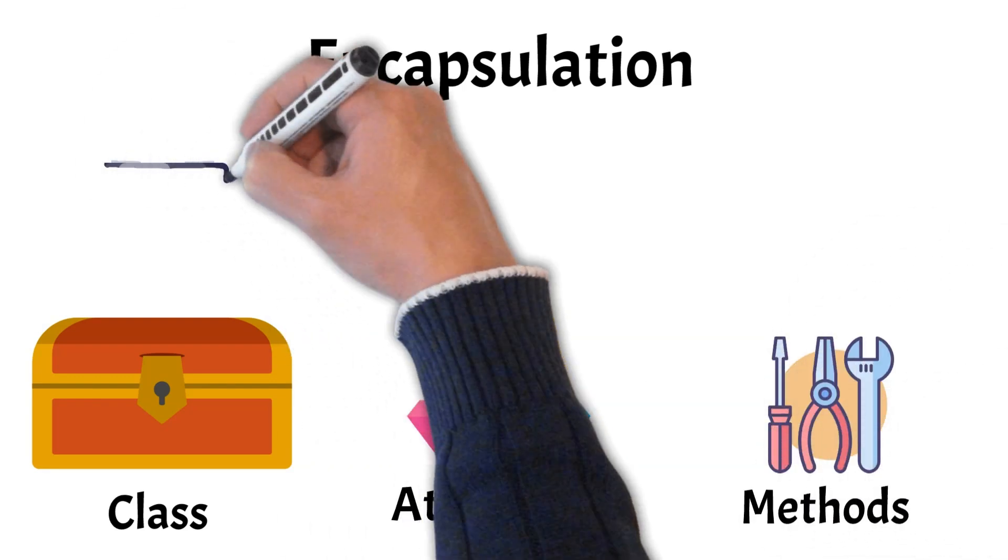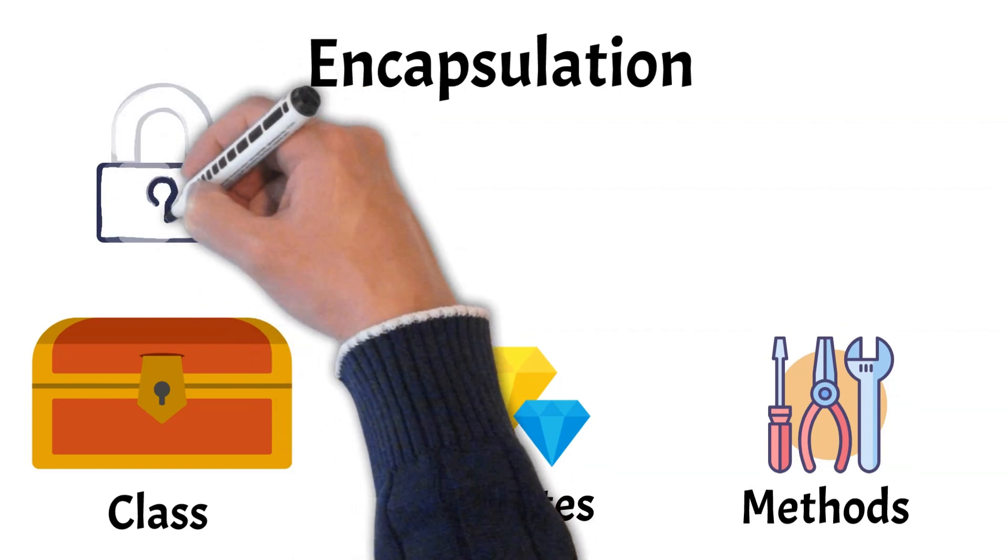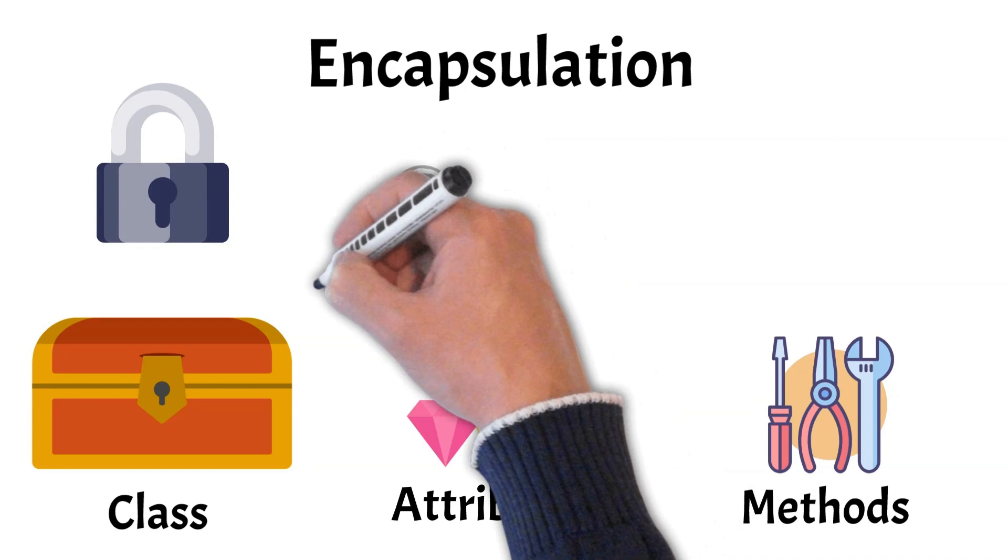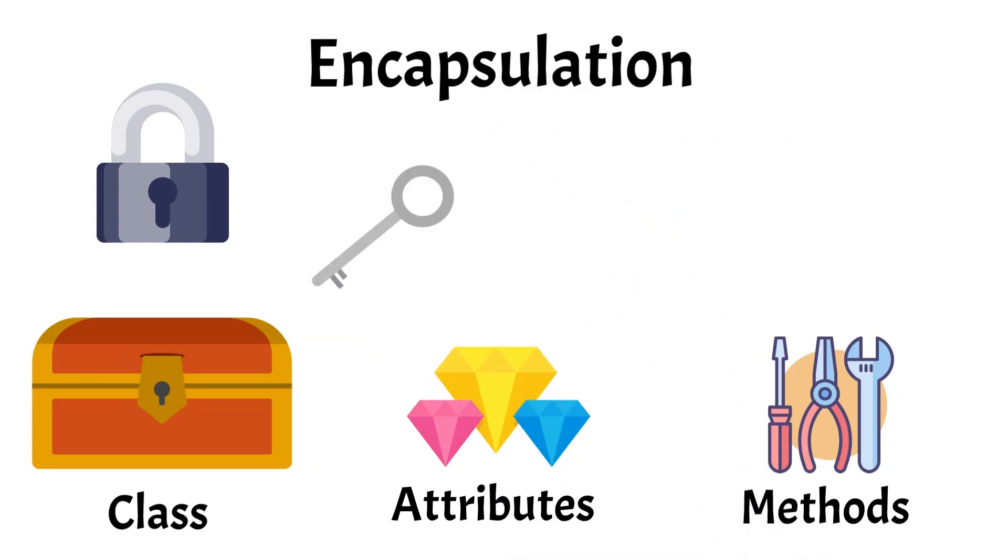The lock on the chest represents encapsulation. It protects the items inside, allowing access only through designated keys or methods. This means that other parts of the program can interact with the chest, class, only in predefined ways.